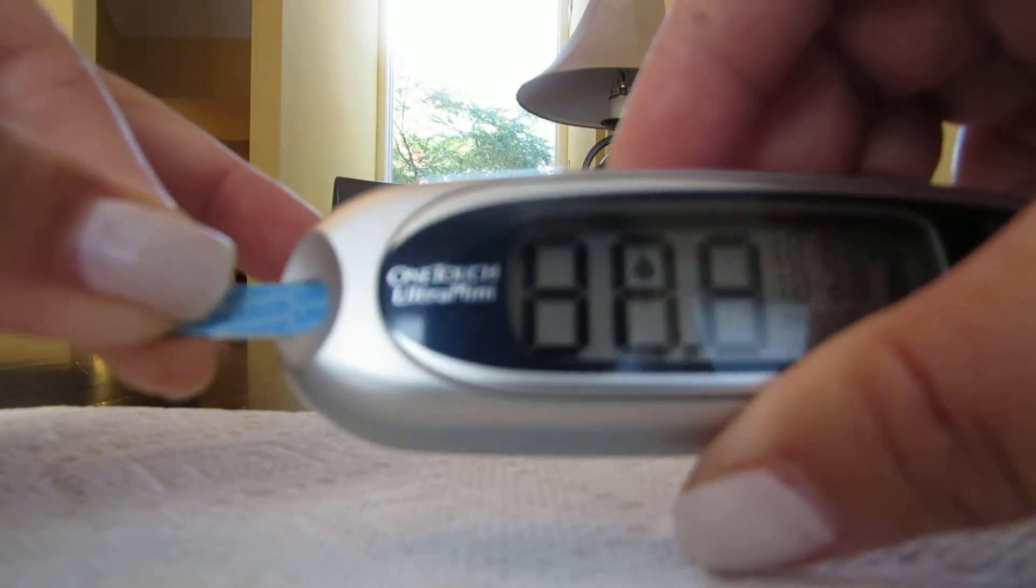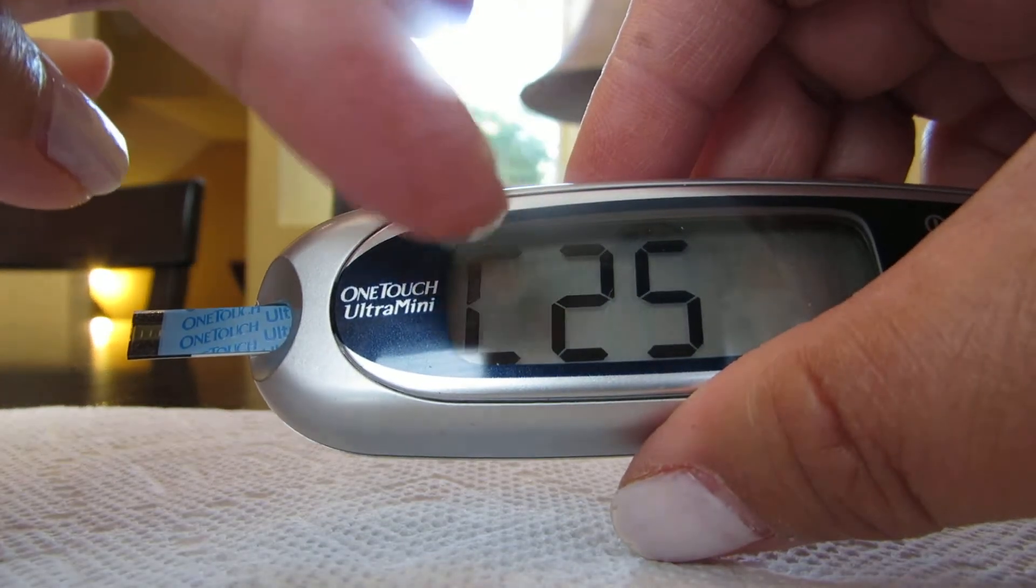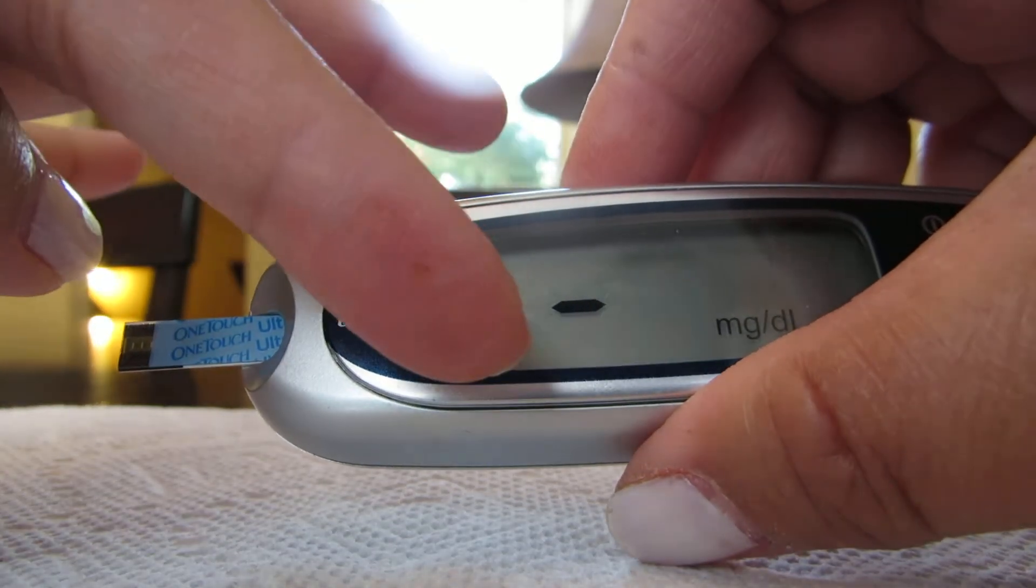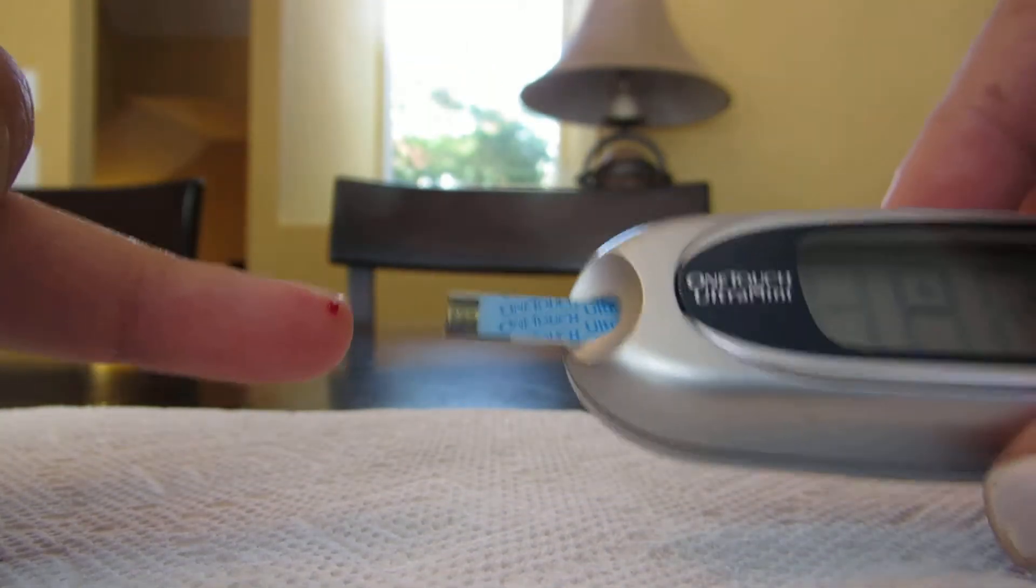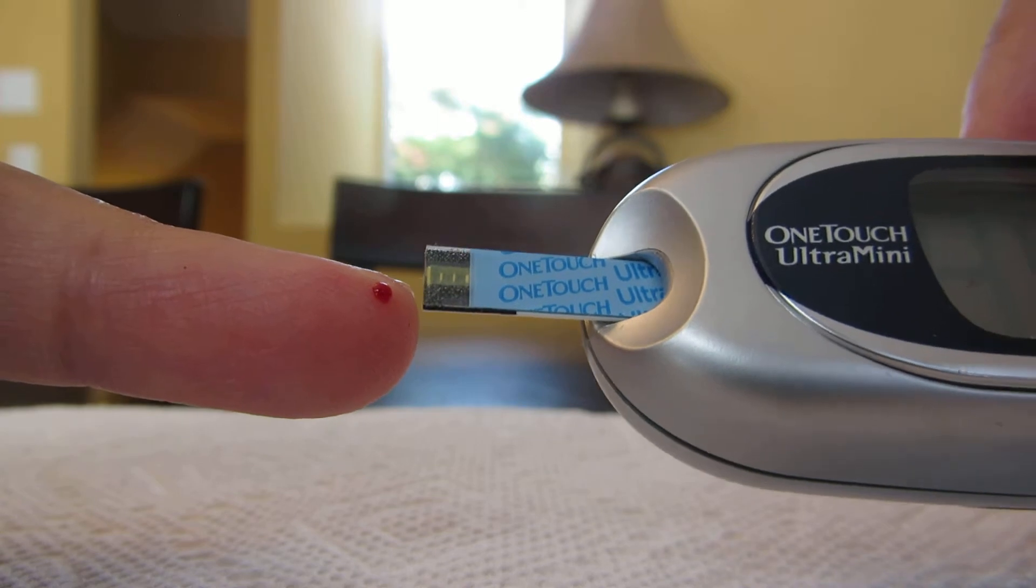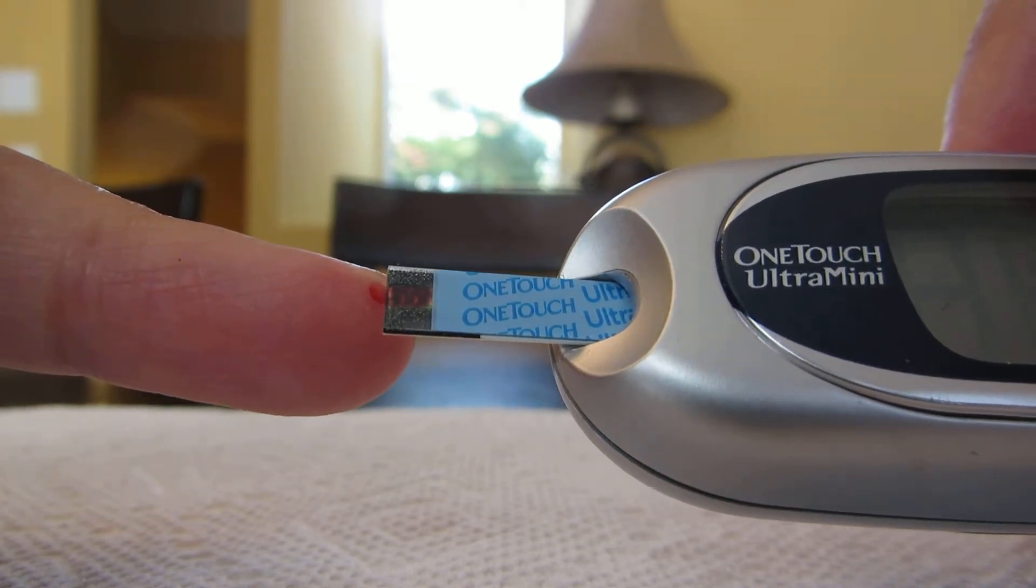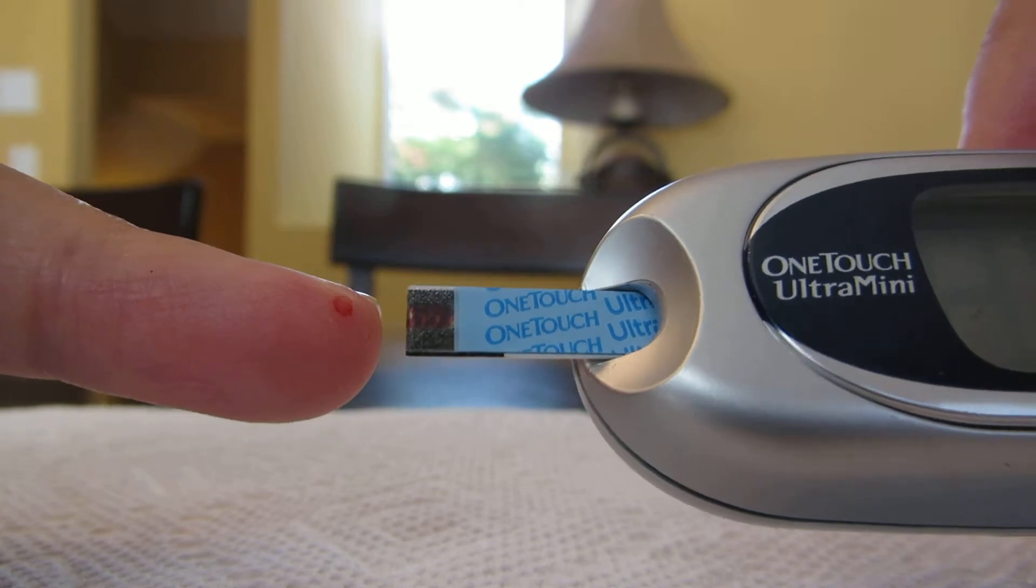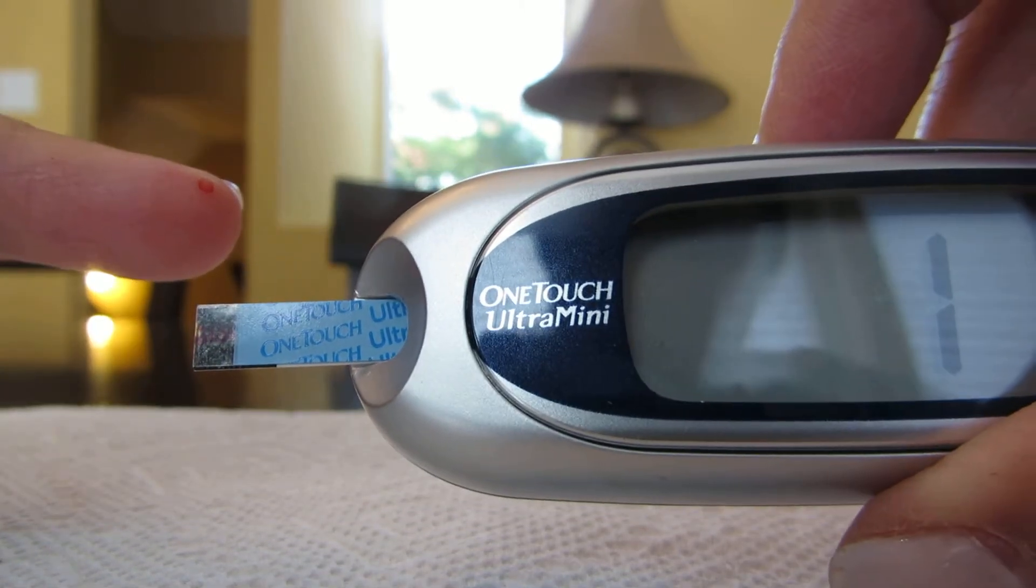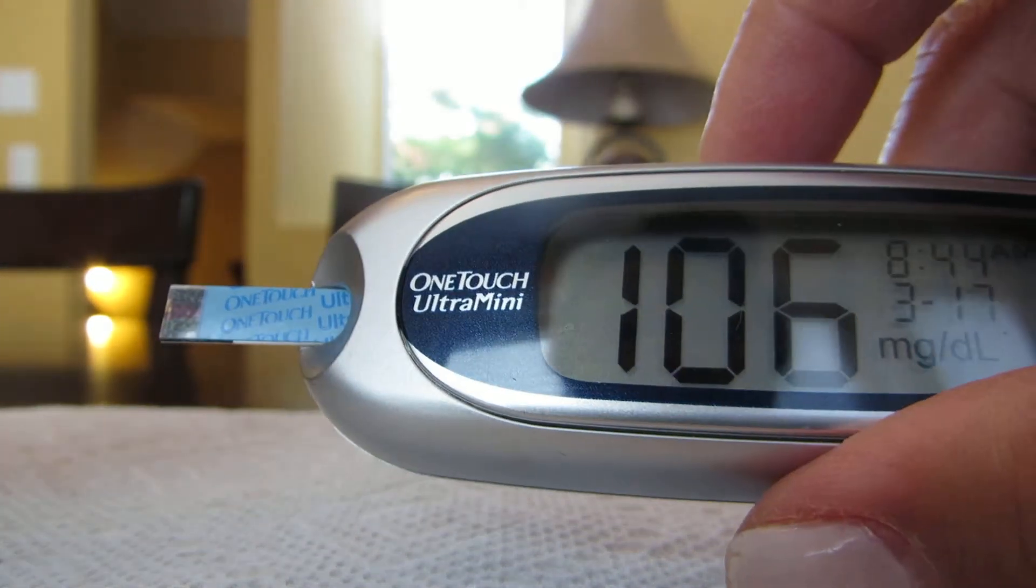That drop of blood—that's when you put the strip. Just touch the blood, don't envelope it. You see it's going to read three, two, one, and my blood level is 106.